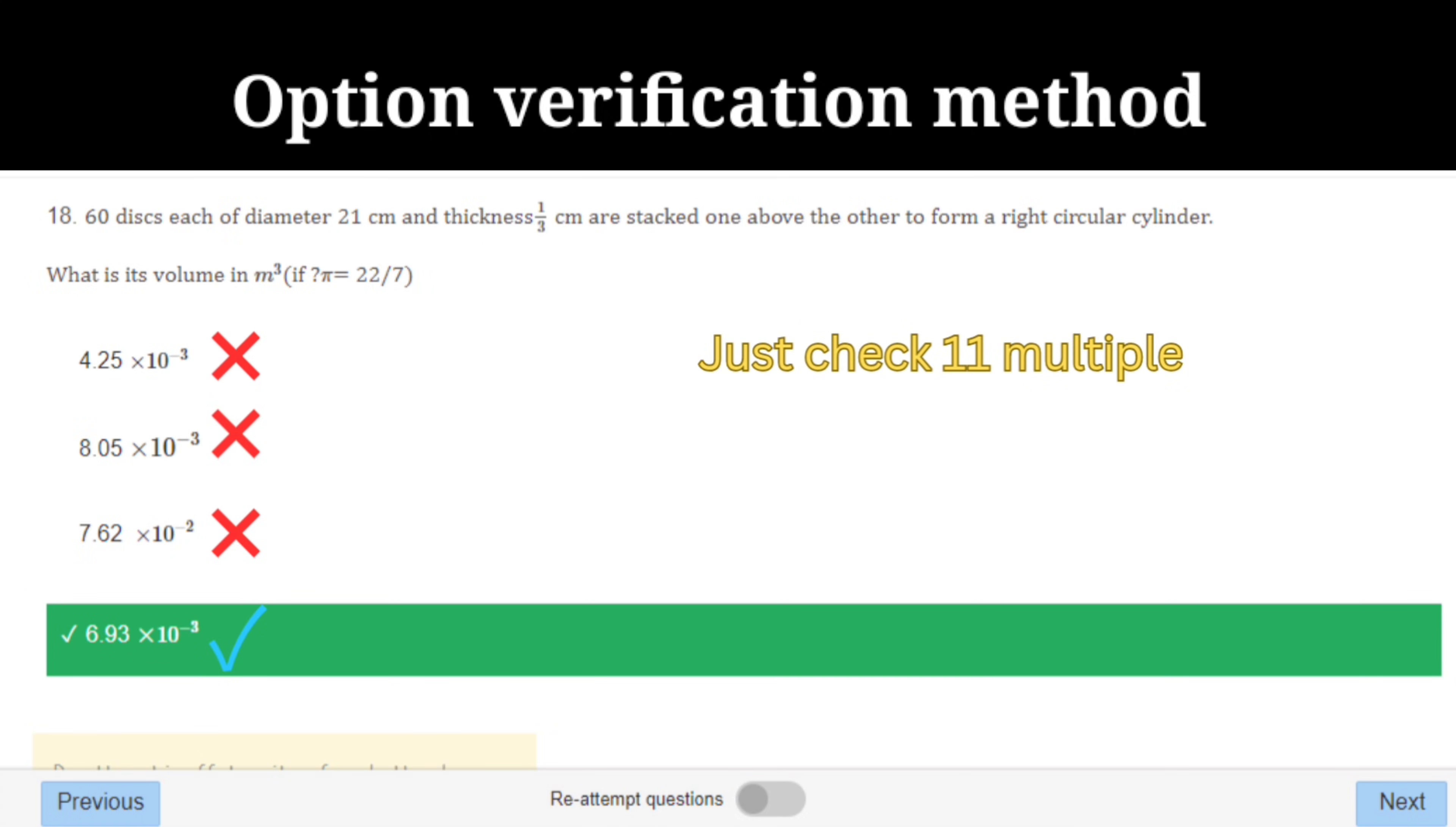And when it comes to mensuration, and if it involves pi, then you should just check 11 multiple in most of the cases. When it comes to sphere or cylinder, etc., it mostly works. For instance, just check 11 multiple in the options.